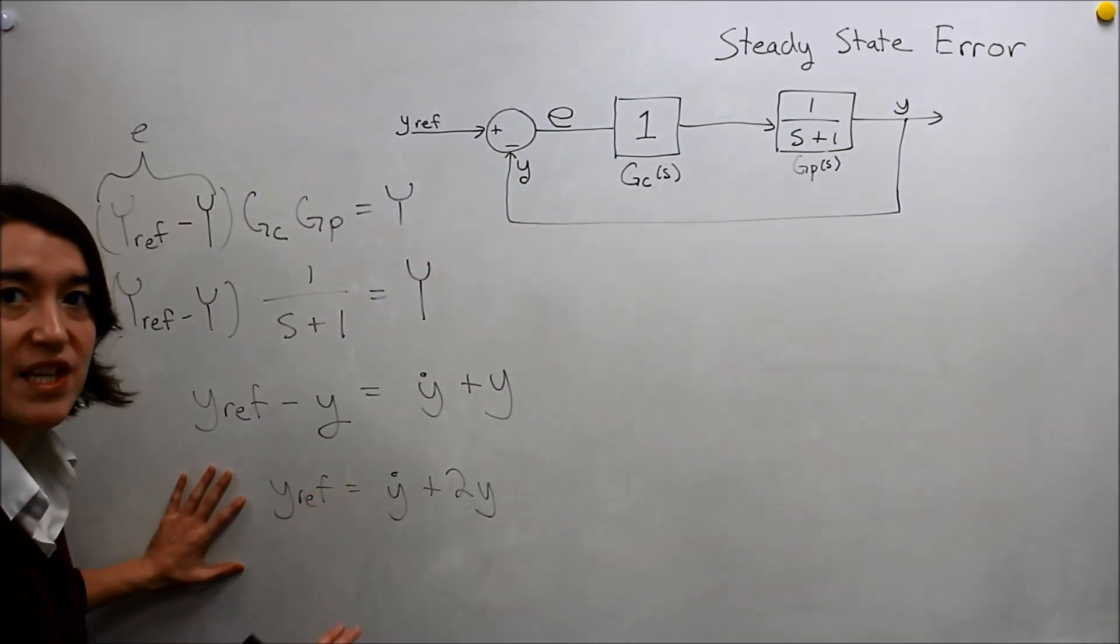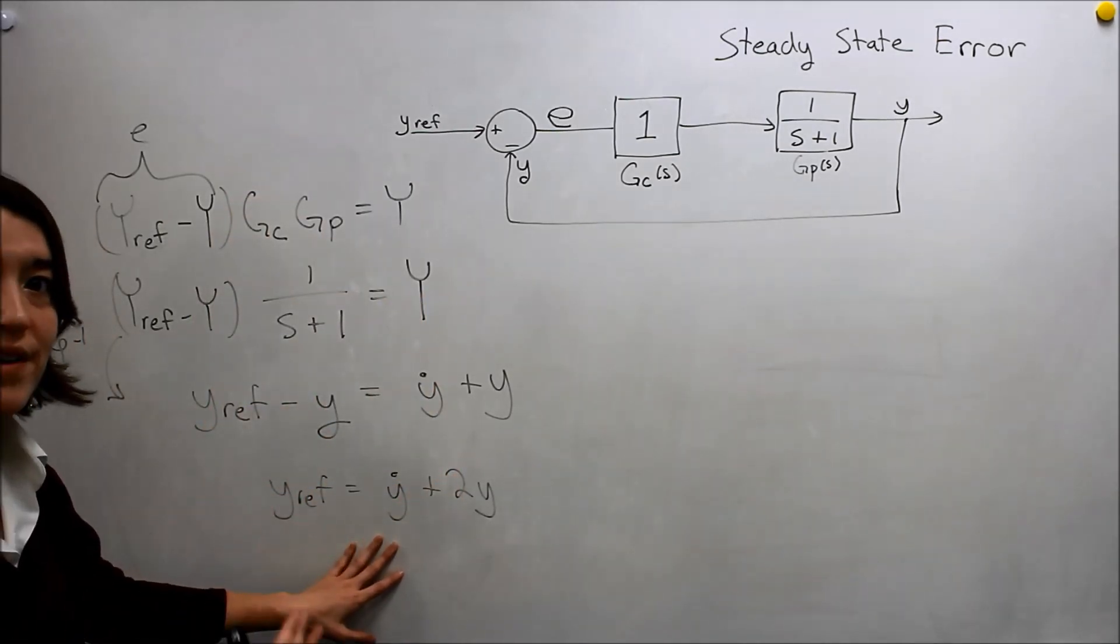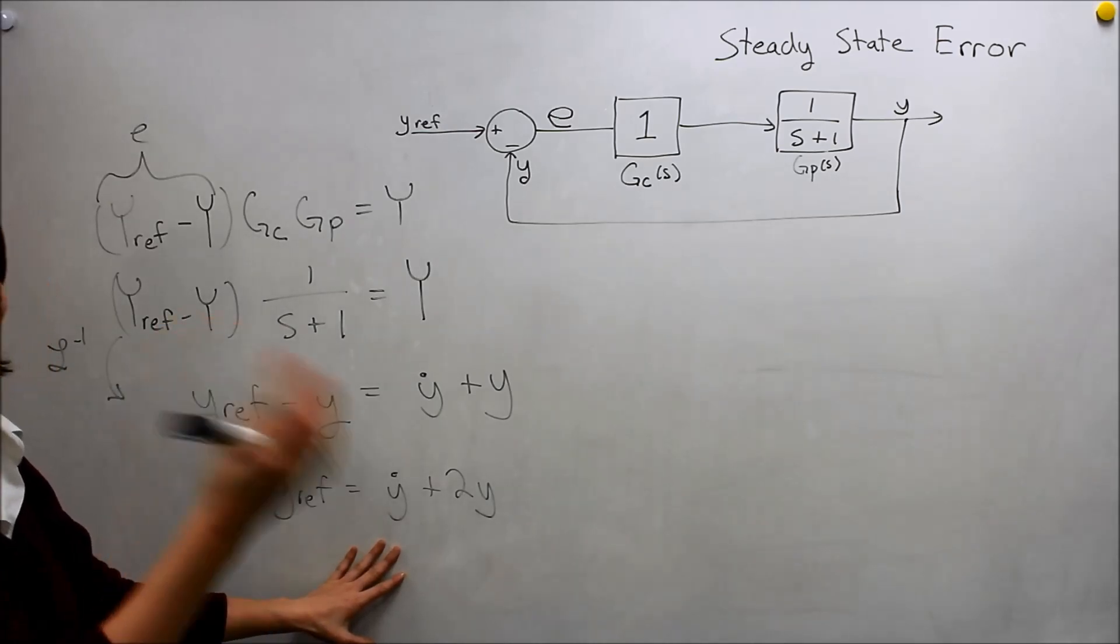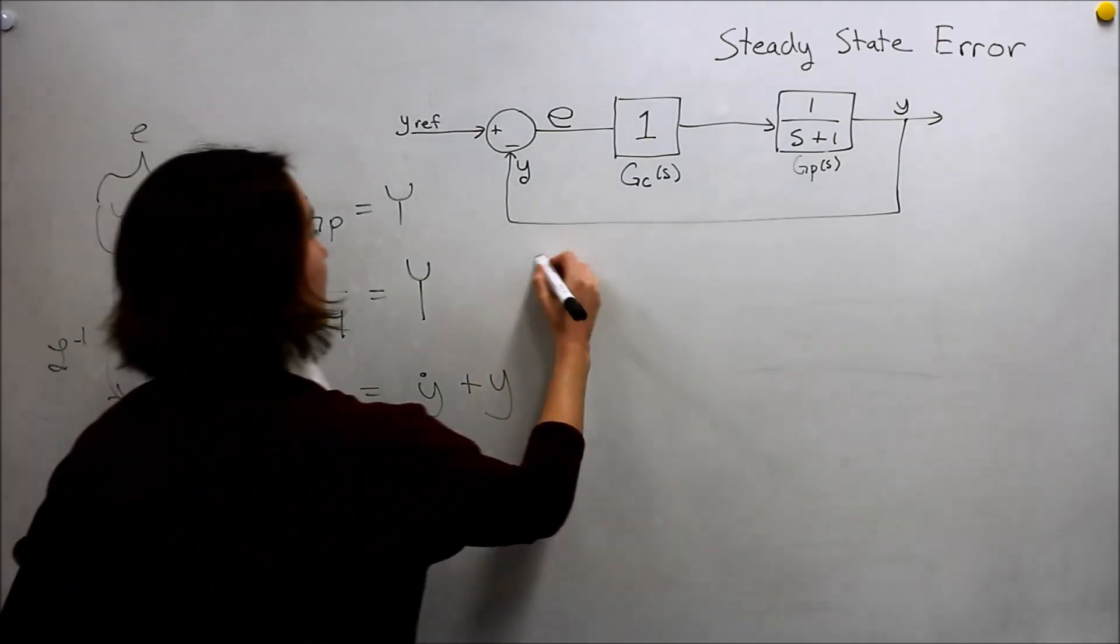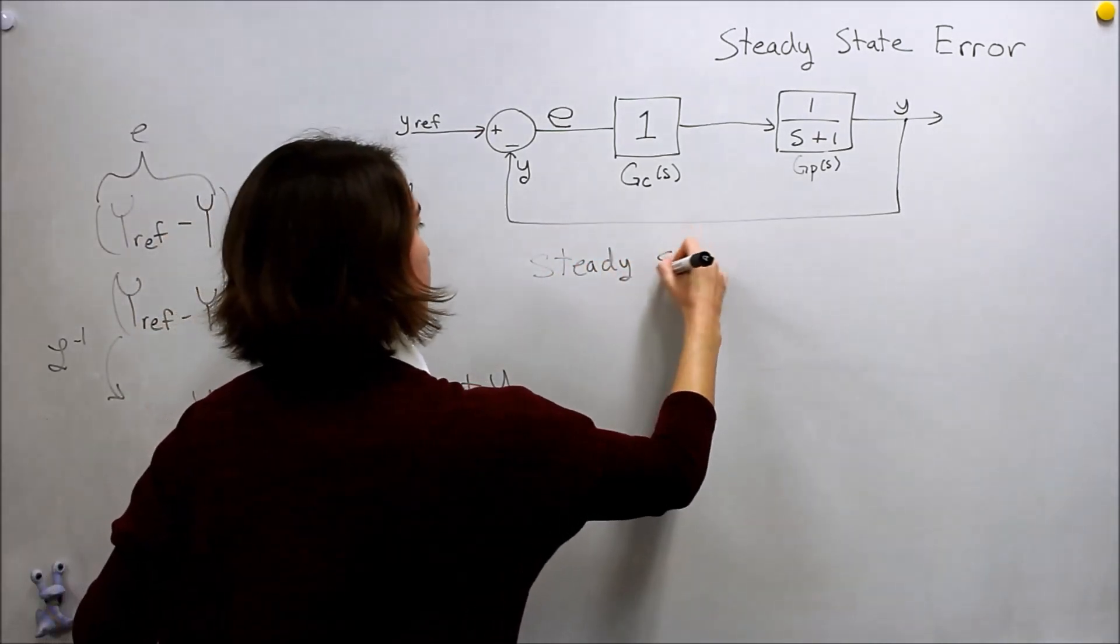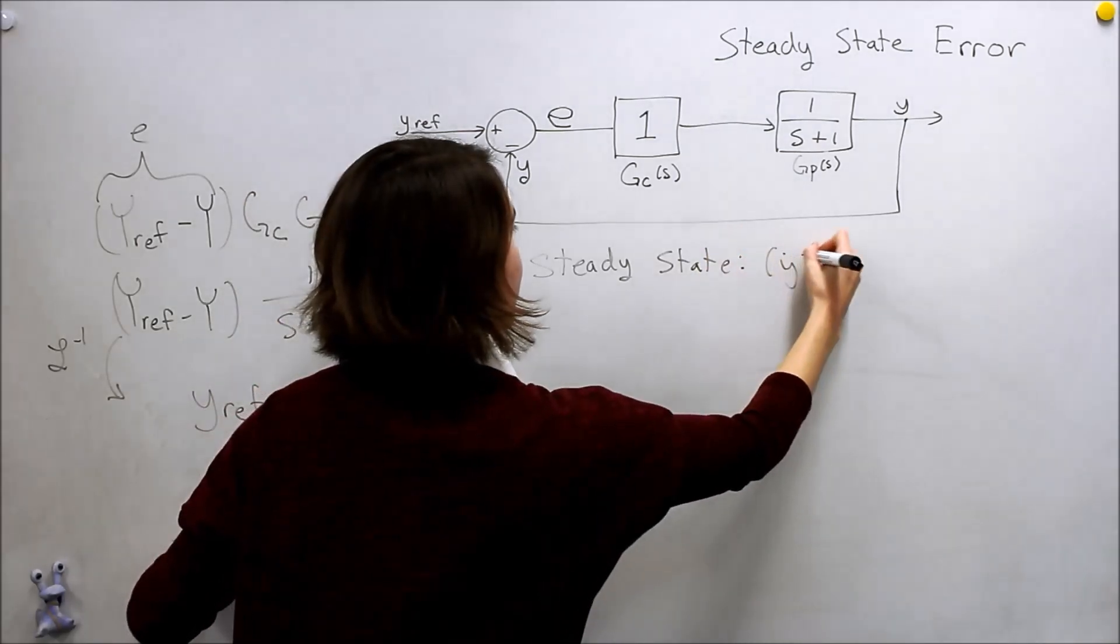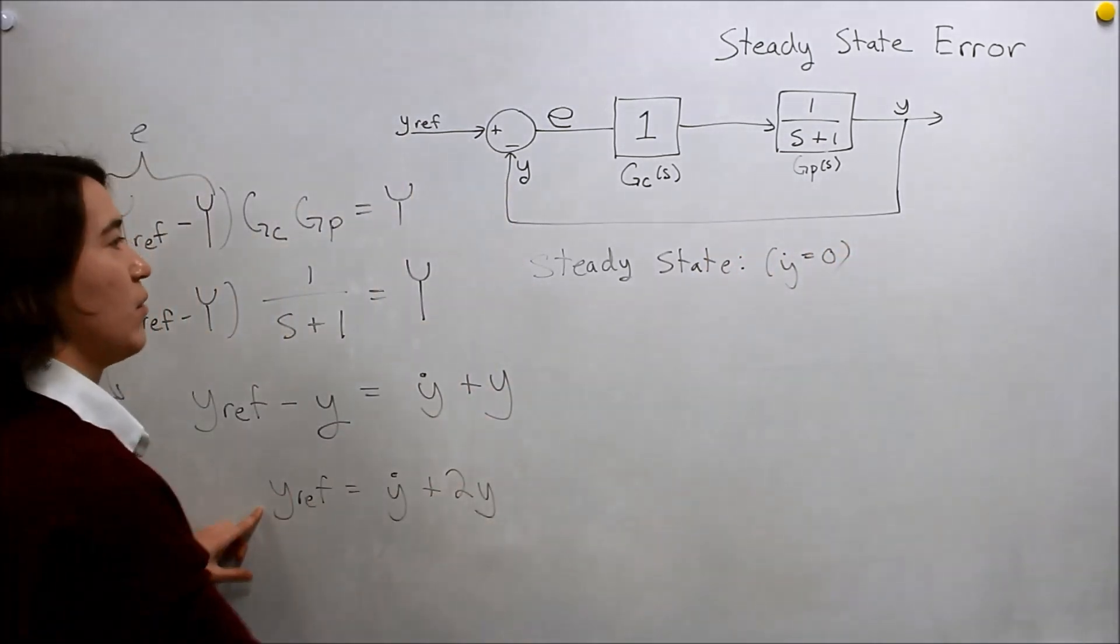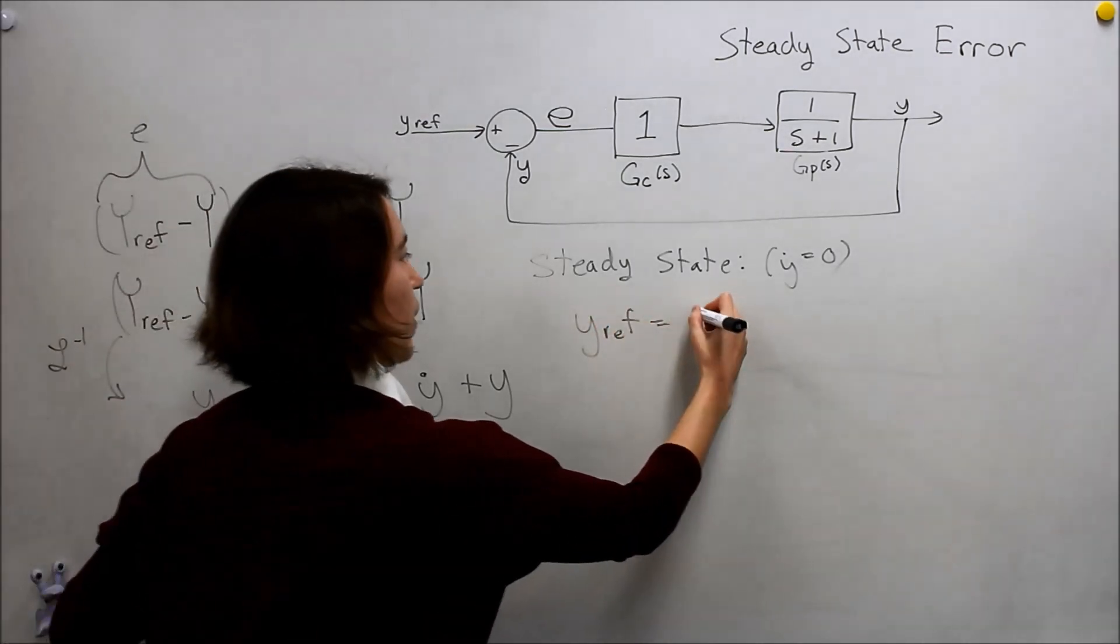Now we want to consider steady state. Steady state is once everything's stabilized and the dynamics, which is y_dot, are no longer a positive or negative value—they're all zero. If we look at steady state, that means y_dot is equal to zero. Then we simply get y_ref is equal to 2y.